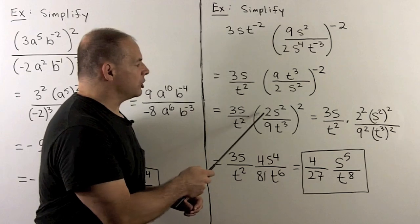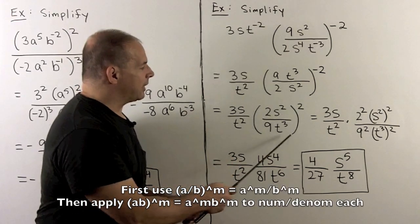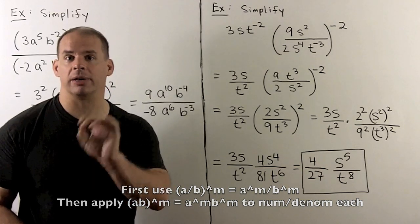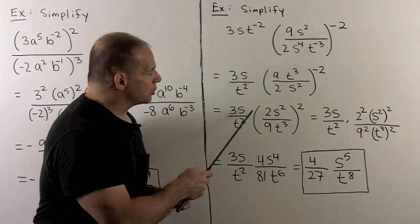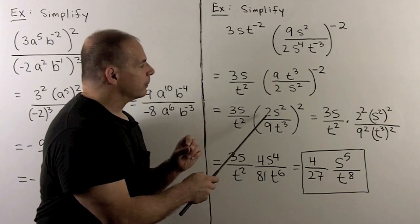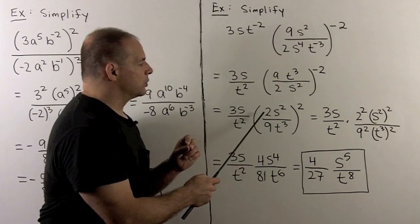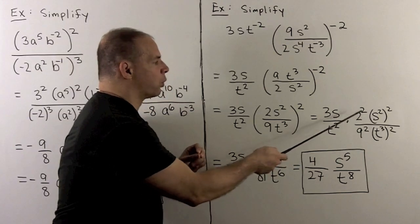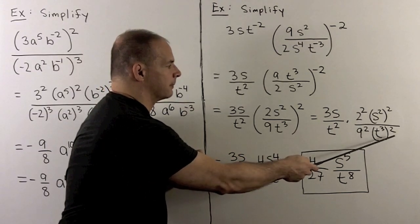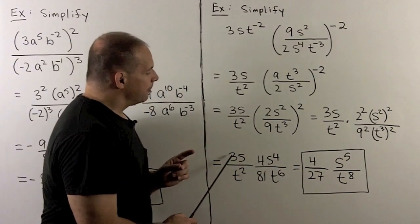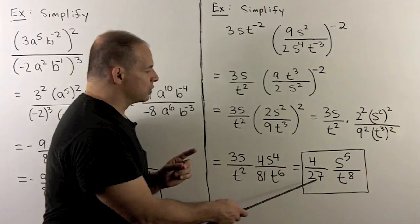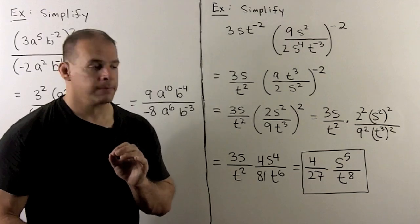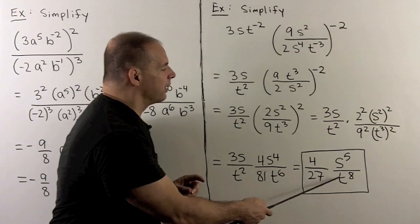Now we square each term, applying the exponent equally to numerator and denominator and to all terms within each. We have 3s over t squared in front. Two squared is four, s squared squared is s to the fourth, nine squared is 81, t cubed squared is t to the sixth. The three over 81 — canceling a three — gives 27. The four stays as is. We have s to the one times s to the fourth giving s to the fifth, and t squared times t to the sixth giving t to the eighth. So the final answer is 4s to the fifth over 27 t to the eighth.